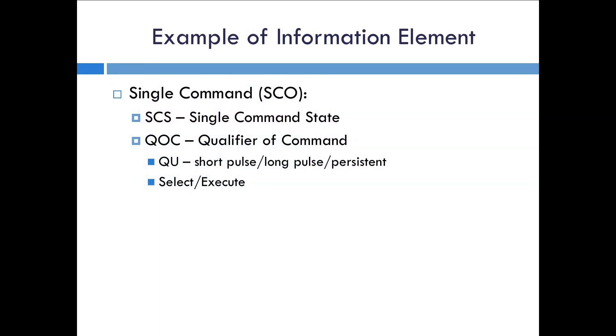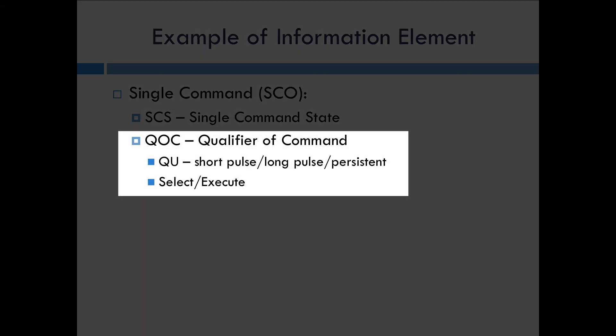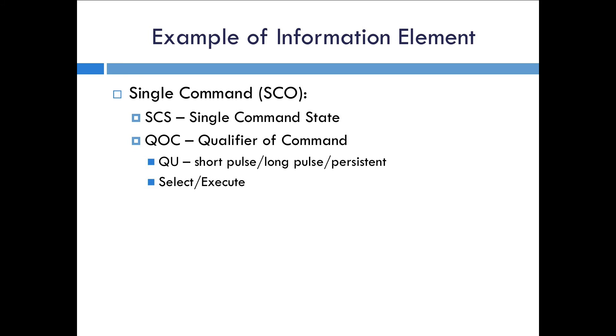Here's another example, this time for a command. A single command tells you the command state and then the qualifier for the command. The qualifier includes the operation: similar to DNP3 modes like latch on, in IEC 60870-5 you have short pulse, long pulse, or persistent. Persistent sets the output and it remains until changed by another command, whereas short and long pulses pulse the output for a predefined period of time. Unlike DNP3 where you can specify the pulse length in the command itself, in IEC 60870-5 the pulse length is a configuration option and you simply specify short pulse or long pulse. The qualifier also indicates whether this is the select or execute for the command.